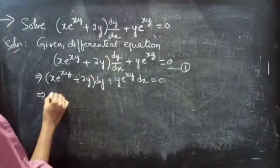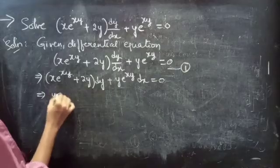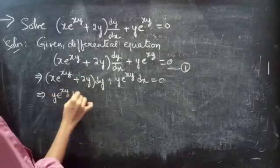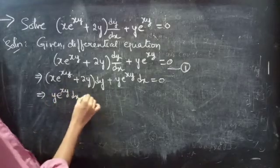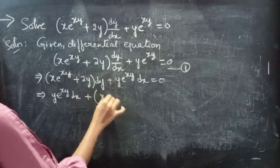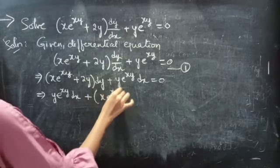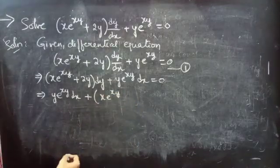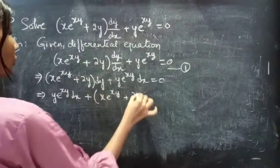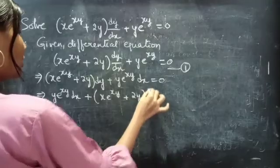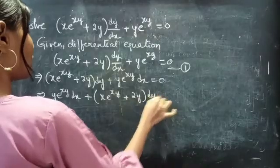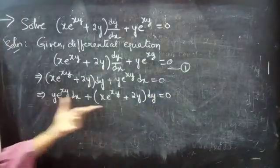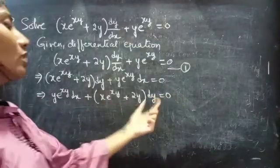You can rewrite it as y·e^(xy) dx plus (x·e^(xy) + 2y) dy equals to 0, which is in the form M dx + N dy equals 0.